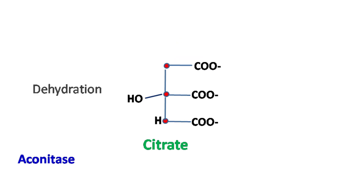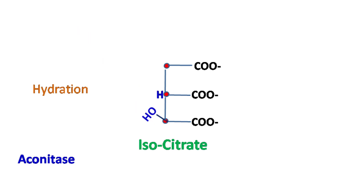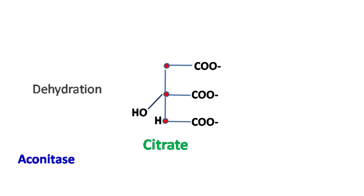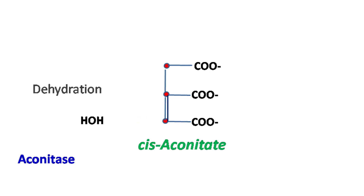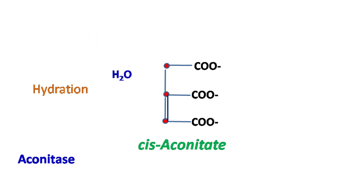Citrate is then isomerized into isocitrate by the enzyme Aconitase. This reaction is a reversible reaction. In this reaction, dehydration of citrate occurs to form an intermediate known as Cis-aconitate, followed by a hydration reaction to form isocitrate.